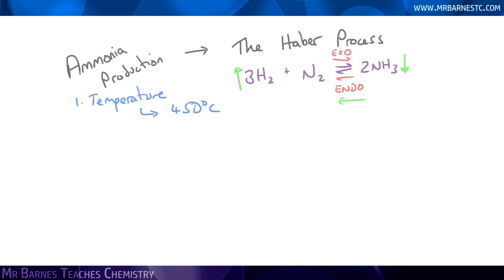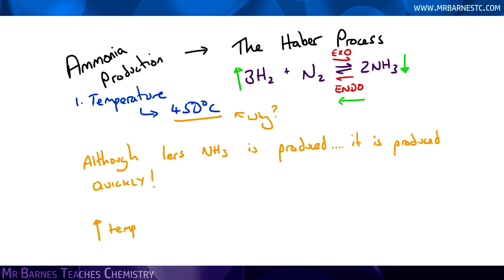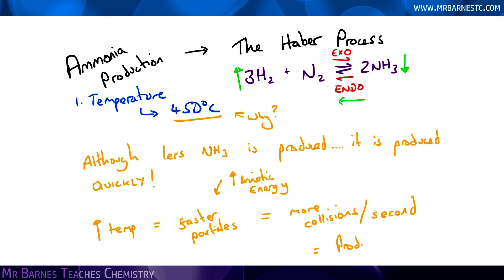So if increasing the temperature decreases the yield of NH₃, why are we using it? It's all to do with kinetic theory. Although we're not getting as much ammonia produced, it's going to be produced really quickly. If you increase the temperature, the particles move faster and have more kinetic energy. They collide more — you get more collisions per second. So 450 degrees is a compromise between the yield you get and the speed at which you get it.